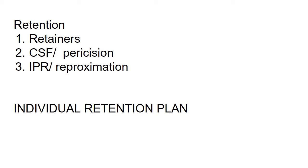Retention in orthodontics consists of three parts. One is retainers — orthodontic appliances given at the end of treatment to retain and maintain the corrections obtained. There are also other procedures such as CSF (circumferential supracrestal fibrotomy) and IPR (interproximal reduction or approximation) which can improve retention. Today we focus only on retainers, particularly Hawley's retainer and fixed retainer. Every patient needs an individualized customized treatment plan, and the same retention regime cannot be given to each patient because every patient comes with a unique malocclusion requiring a unique retention plan.